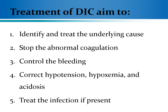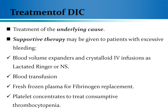Regarding the treatment of patients with DIC, which mainly aims to identify and correct the underlying cause, stop the abnormal coagulation process, control the bleeding tendency, and correct abnormal conditions such as hypotension, hypoxemia, and acidosis. The treatment strategy involves providing supportive therapy to counteract higher bleeding tendency by replacement, including blood volume expanders, crystalloid intravenous fluids such as lactated Ringer's or normal saline, blood transfusion, fresh frozen plasma to replace fibrinogen, and platelets to correct thrombocytopenia.